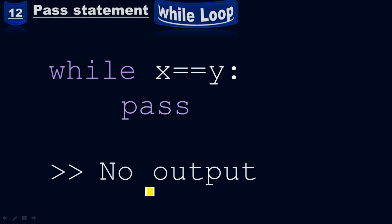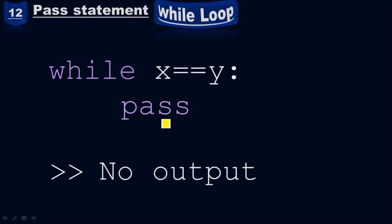The program won't crash when you give the pass statement. In other words, because of the pass statement, we can stop the program from crashing — it simply won't show any result. If you remove the pass, it will give you an error, because while x equals y, we don't know what x is or what y is, so the program will crash. But since we have the pass statement, it won't show any result, it will stop the program from crashing, and it will stop it from giving an error in the final output.